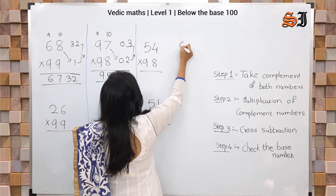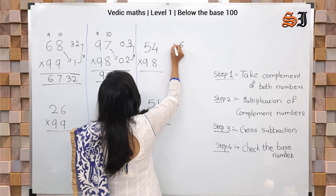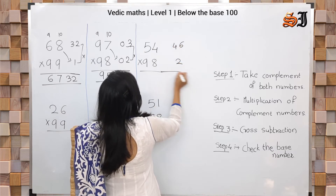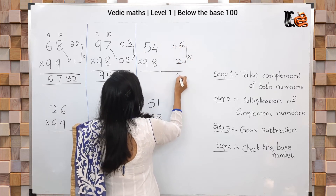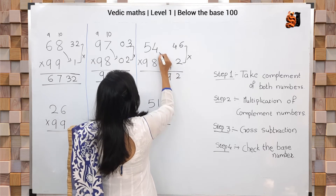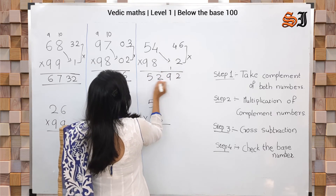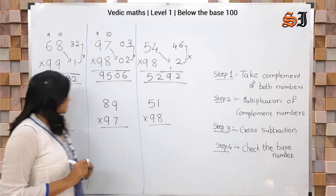For the next example: 10 minus 4 = 6, 9 minus 5 = 4, and here we have 2. Multiply these compliments: 2 × 6 = 12, 2 × 4 = 8. Cross subtraction gives 52. So the answer is 5292.